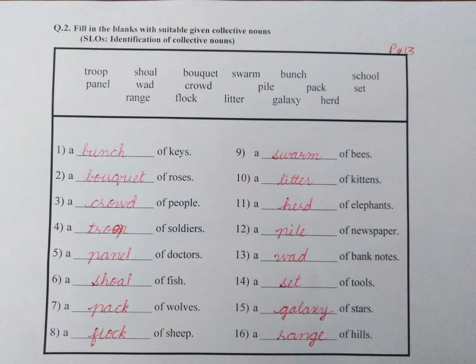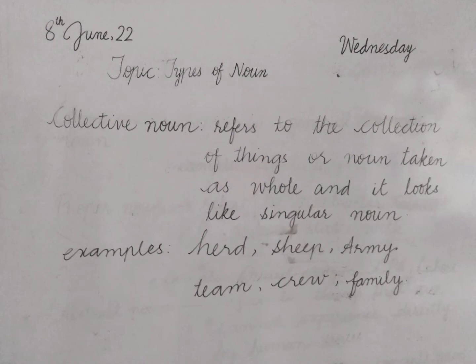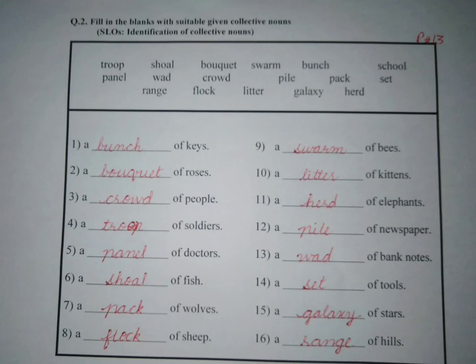Before going to start our question, first we will try to know what collective nouns are. A collective noun refers to the collection of things or nouns taken as a whole, and it looks like a singular noun. When we combine or collect different things together, we denote that group as a single noun — that is known as a collective noun. Some examples are: herd, sheep, army, team, crew, family, etc.